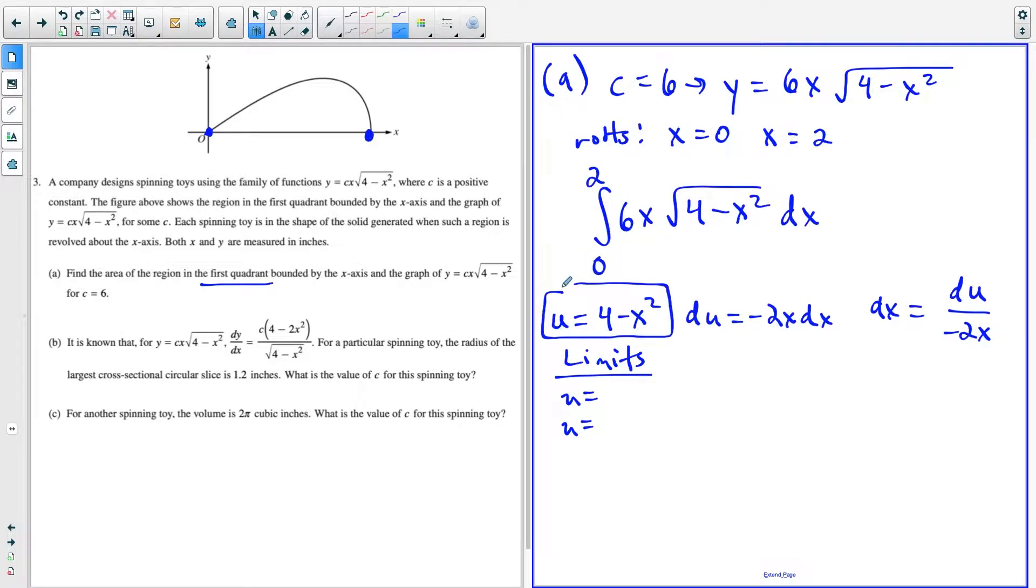So we go ahead and do that. Let's say I plug in the upper limit x equals two, that's going to give me four minus two squared. So our new upper limit is zero. And if I plug in the old lower limit of x equals zero, I have four minus zero squared is four. So now we could transform this integral.